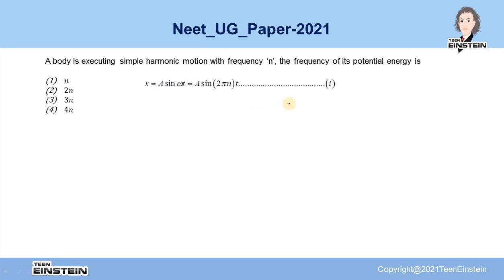Now, let us write down the expression for the potential energy of this body which is executing simple harmonic motion. We know for a simple harmonic oscillator, the potential energy can be written as half k x square, where k equals m omega square and x is the displacement. If we put the value of k and x from equation 1, then we get the expression for the potential energy as half m omega square a square sin square 2 pi n t.